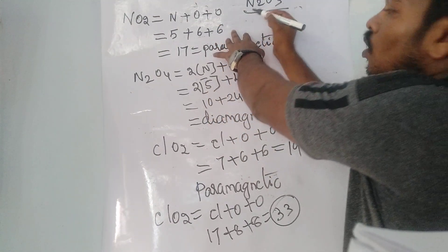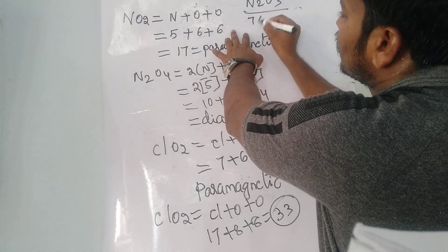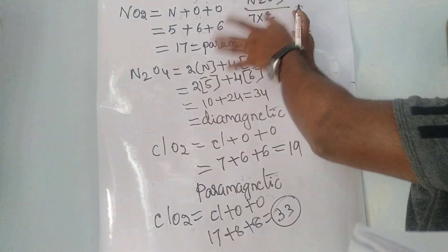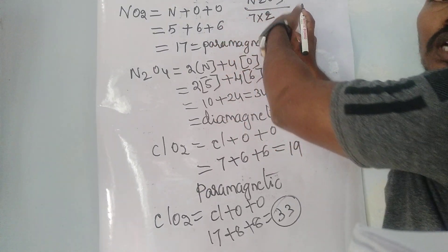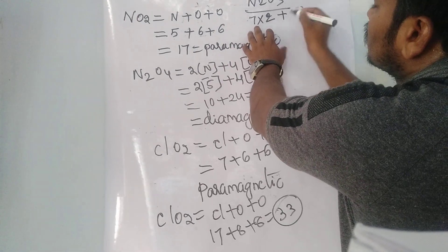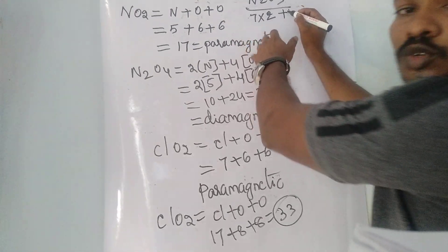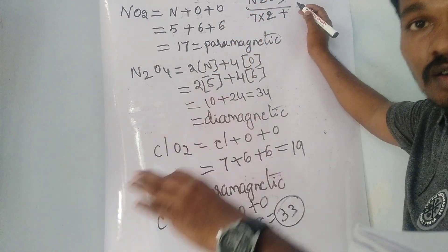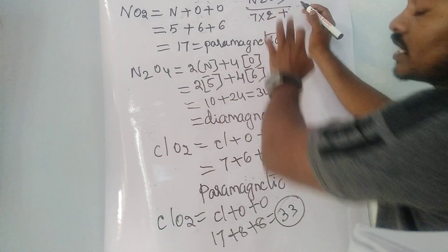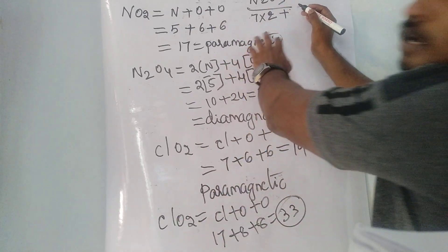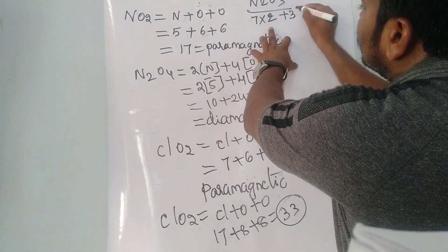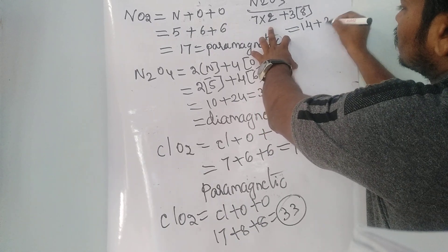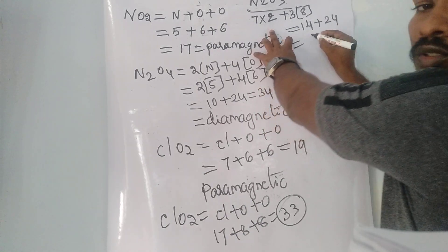Example: N2O3. Using total electrons: nitrogen atomic number is 7, two nitrogens = 7 × 2 = 14. Three oxygens, each with atomic number 8: 3 × 8 = 24. Total electrons: 14 + 24 = 38. 38 is an even number, so N2O3 is diamagnetic in nature.